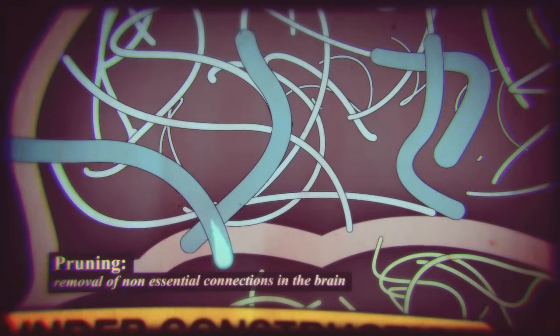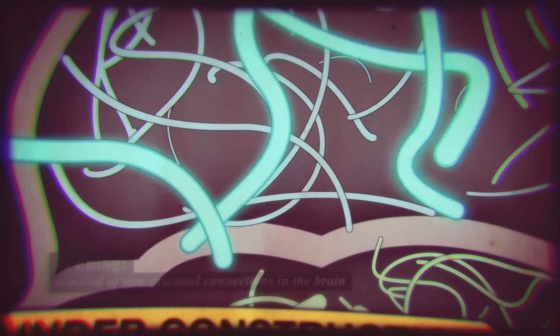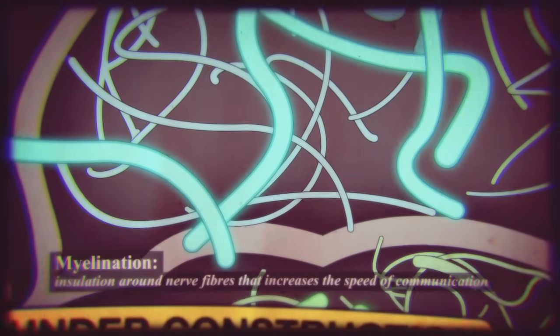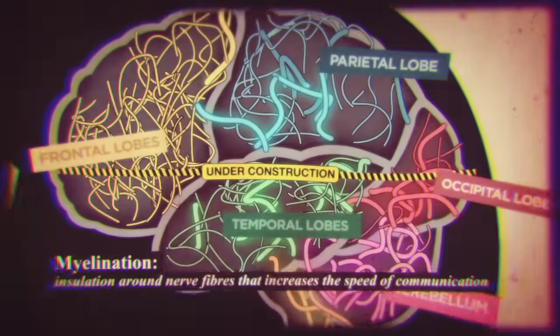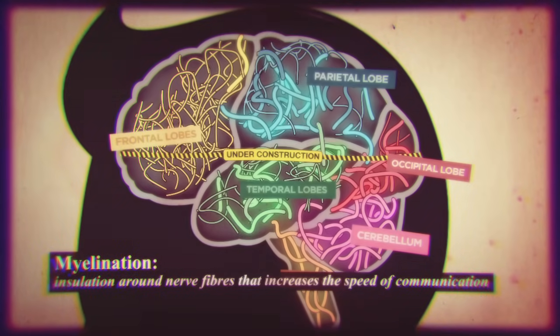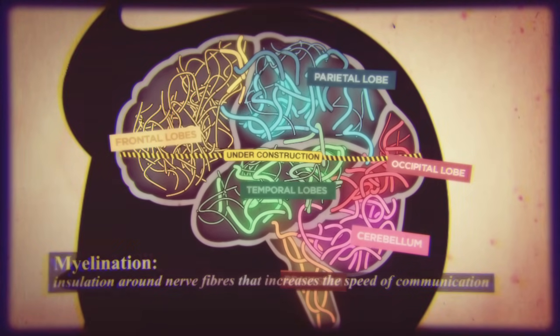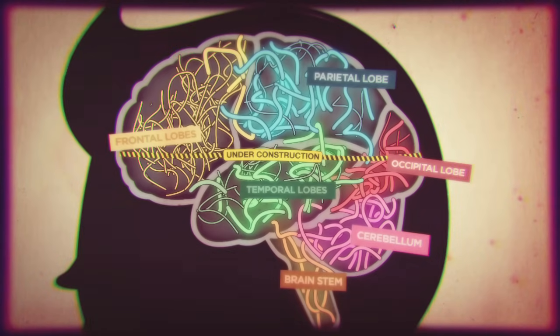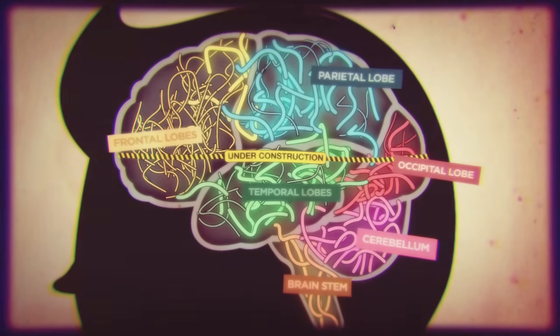At the same time, the connections that are kept are insulated to allow for faster communication across the brain, a process called myelination. Pruning and myelination occur gradually over the teenage years and are greatly influenced by our experiences and interactions with the outside world, including the alcohol and drugs we choose to take.